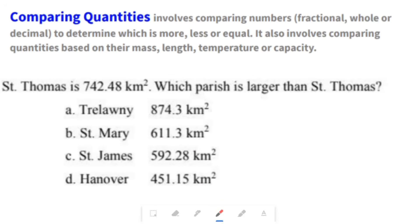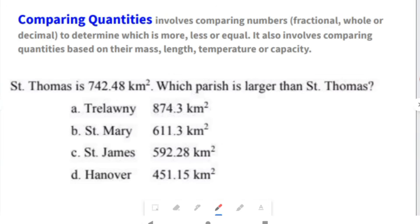Moving on to comparing quantities. This involves comparing numbers, fractions, or decimals, to determine which is more, less or equal. It also involves comparing quantities based on their mass, length, temperature or capacity. This example reads, St. Thomas is 742.48 km². Which parish is larger than St. Thomas? Look at option A. 874.3 km² is larger than 742.48 km². So, as we can see, the first option is actually the correct option. That would be option A. And, if you look at all the other options, they are all smaller than 742.48 km².